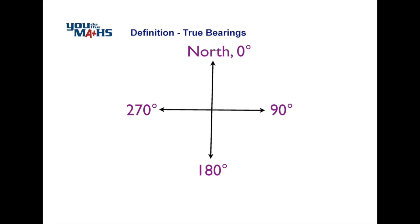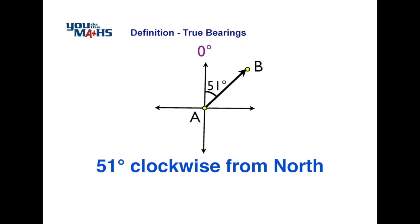So an example like this we head towards the north which is zero degrees. We move around clockwise from the north until we meet our new point, in this case point B, and that's 51 degrees.